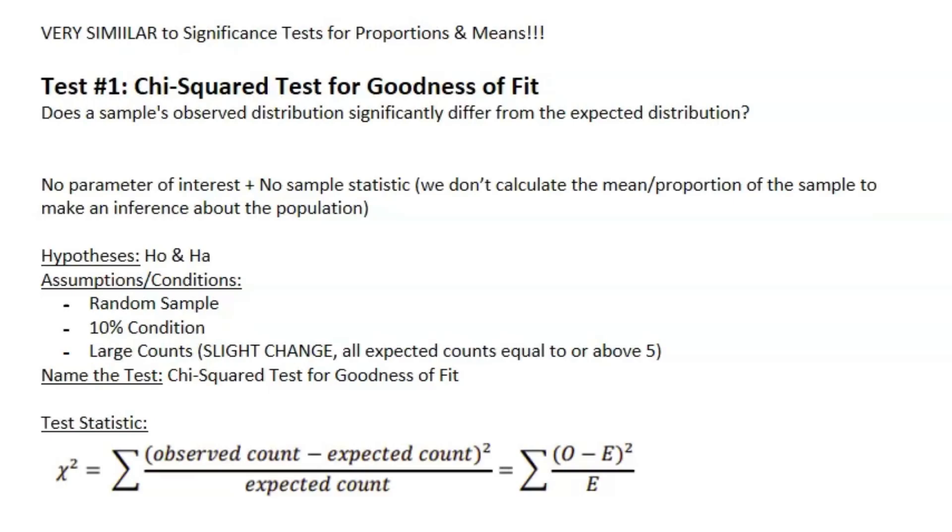Alright, so we're moving on to Unit 8 of AP Stats, which has to do with inference for categorical data: chi-squared tests. If you're gonna guess, this is very similar to significance tests for proportions and means.